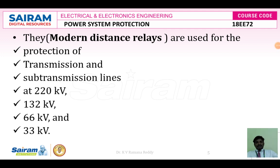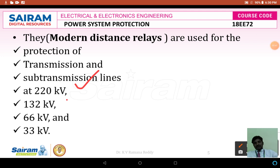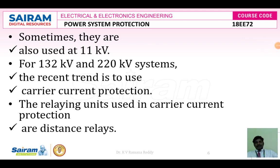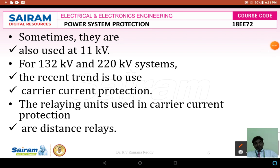Modern distance relays are used for protection of transmission and sub-transmission lines at different operating voltages like 220 kV, 132 kV, 66 kV, and 33 kV transmission lines. They can also be used at 11 kV. For 132 kV and 220 kV systems, the recent trend is to use carrier current protection, and the relaying units used in carrier current protection are distance relays. Carrier current protection carries information through the transmission line — line impedance, admittance, or reactance — and compares it with a preset value.